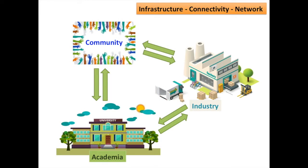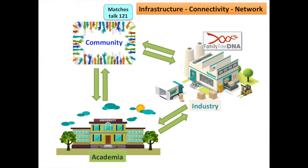It all started in 2000 when Family Tree DNA launched the YSTR12 test — 12 short tandem repeats — and also the HV01 mitochondrial DNA test. That got people talking to each other: 'Hey, we're a match on our Y-DNA, does that mean we have a common ancestor?' But then Family Tree DNA did something very important: it created an infrastructure where people could run their own DNA projects. And this was the start of genetic genealogy as a citizen science.